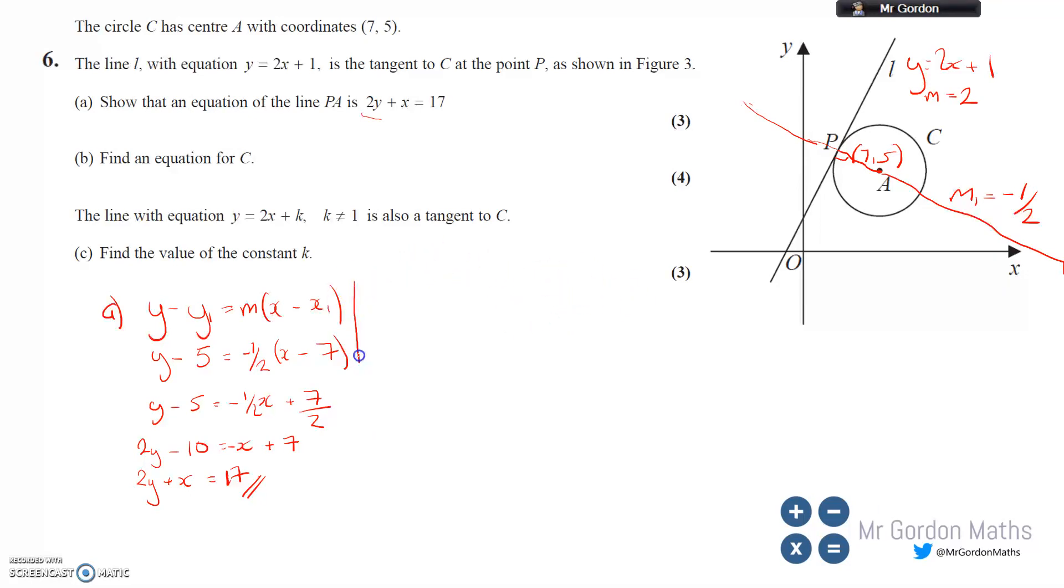Part B: find an equation for C. C is the circle, so we need the circle formula: (x-a)²+(y-b)²=r². A and B are the center (7,5). I have those values. I just need to work out the radius, which is the distance between point P and A. I know what A is, but I don't know the intersection between L and C.